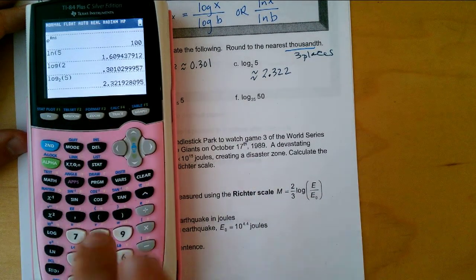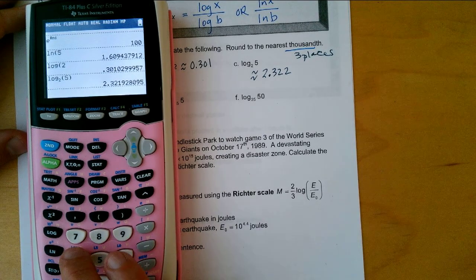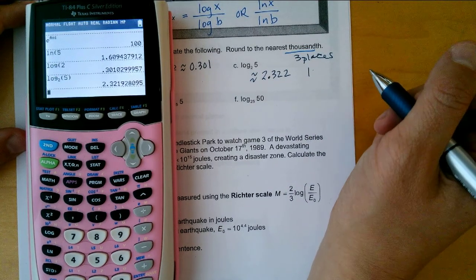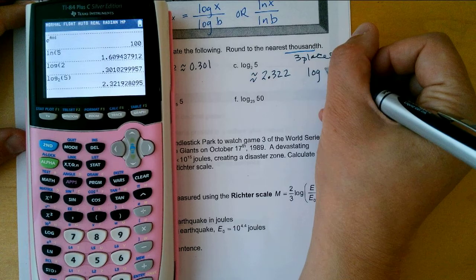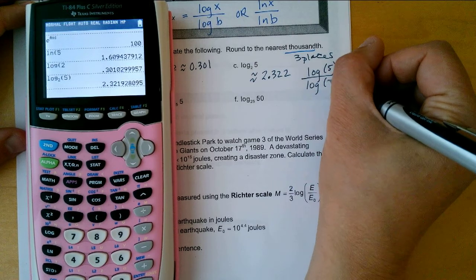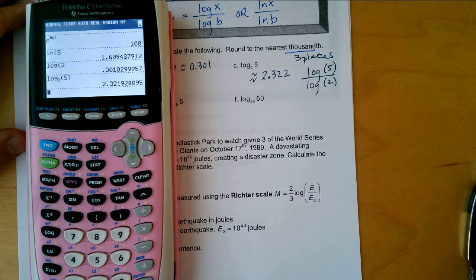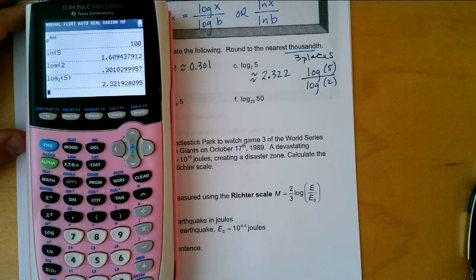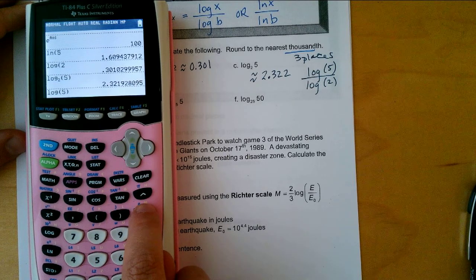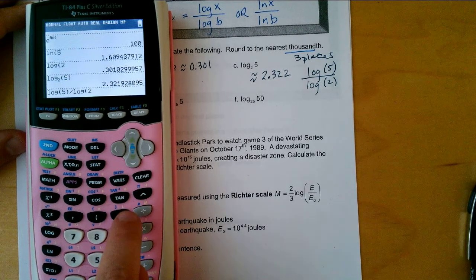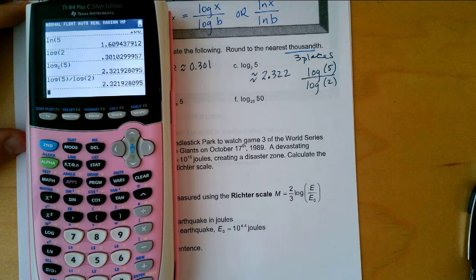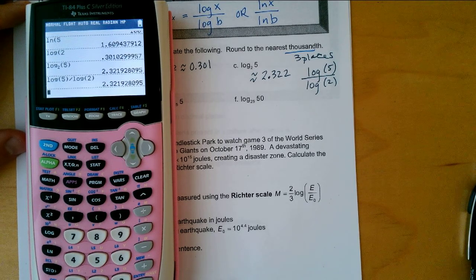That's kind of a lot of steps to go into that menu. So if you just did the change of base, what would I enter? Log of five divided by what? Log of two. And why did I put two in the denominator? Because two is the base. So I go log of five, close the parentheses, divided by log of two, close the parentheses, enter. Notice I get the exact same thing.